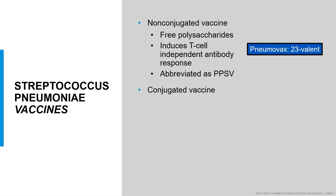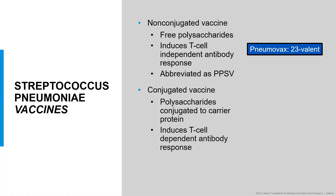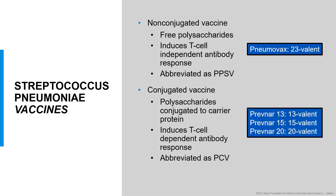For this reason, the conjugated vaccines were developed. In the conjugated vaccines, polysaccharides are linked to a protein. By conjugating the polysaccharide to a protein carrier, a T-cell dependent antibody response can be initiated, which is significantly more robust in children. These conjugated vaccines are identified as PCVs or polysaccharide conjugate vaccines. There are three PCVs currently available for clinical use: Prevnar 13, Prevnar 15, and Prevnar 20, representing 13, 15, and 20 serotypes respectively.